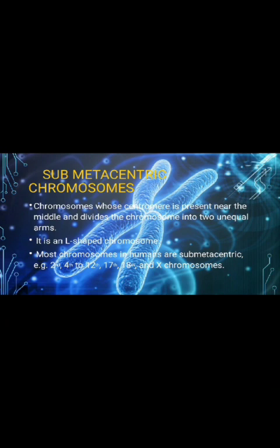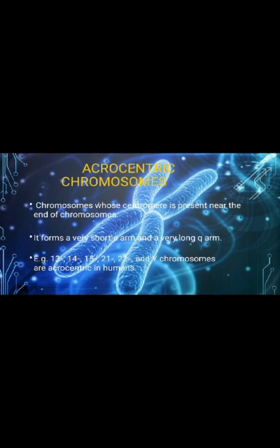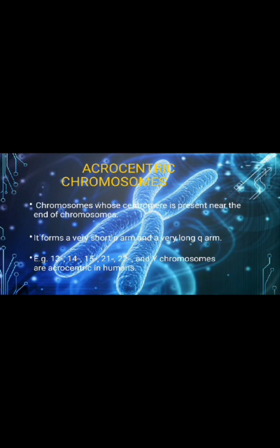Examples of sub-metacentric chromosomes are the 2nd, 4th, 12th, 17th, 18th, and X chromosomes. Next, acrocentric chromosomes: these are chromosomes whose centromere is present near the end, forming a very short P arm and a very long Q arm. Examples in humans include the 13th, 14th, 15th, 21st, 22nd, and Y chromosomes.